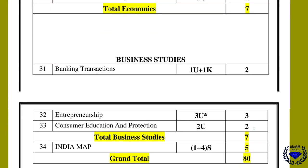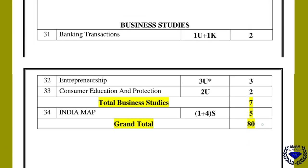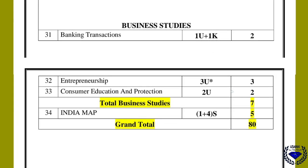From business studies, banking transactions has one one-mark and one objective question — total two marks. Entrepreneurship has a three-mark 'or' question, which may also come from banking — it is a merger of both. Consumer education and protection carries two marks — total seven marks from business studies. Lastly, there is one skill-based map question: one mark for drawing the India map and four marks for locating places on it.